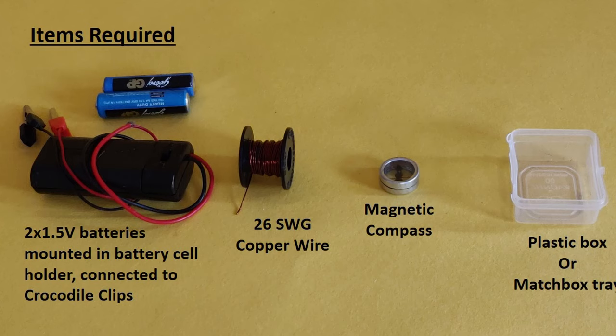For this, we will require two 1.5 volt batteries mounted in a battery cell holder which is connected to crocodile clips. We will also need 26 standard wire gauge copper wire, a magnetic compass, and a small plastic box or a matchbox tray in which the magnetic compass fits.